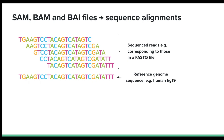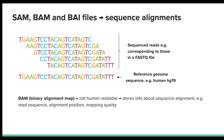BAM stands for Binary Alignment Map. It's a binary format, which means it's not human readable. This allows for efficient compression and storage of large amounts of sequence alignment data. BAM files store information about the alignment of sequencing reads to a reference genome, such as the human genome HG19. This includes details such as the read sequence, the alignment position, and the mapping quality of the read. BAM files are often accompanied by index files with the suffix .bai.